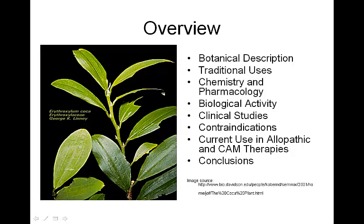To begin my presentation on coca, I will start off with the botanical description of the plant, and then move on to my favorite section of traditional uses, which was most interesting while doing research on coca — just because of how elaborate a path this plant has, and how old it is. It was very easy to find methods that people previous to us had used this plant. I will then move on to the chemistry and pharmacology, followed by the biological activity, some human clinical studies, contraindications, current use in allopathic and chemotherapies, and ending with a conclusion.